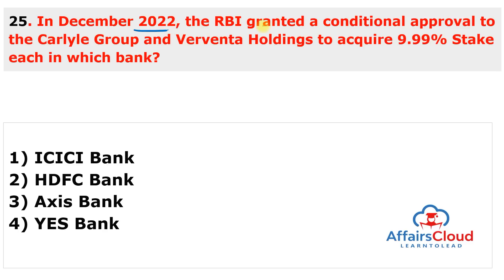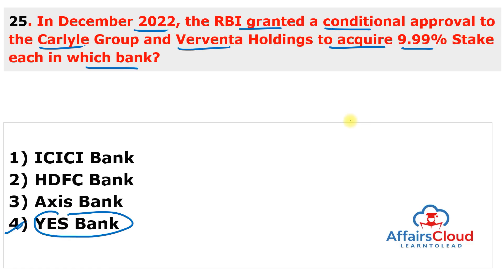Question 25: In December 2022, RBI granted conditional approval to which groups to acquire a 9.99% stake each in which bank? The answer is Yes Bank. The Reserve Bank of India granted conditional approval to Carlisle Group and Virwantha Holdings to acquire 9.99% stake each in Yes Bank through subscription to equity shares and share warrants. The investment is by CA Beskew Investment (Carlisle Group) and Virwantha Holdings, an affiliate of funds managed by Advent.